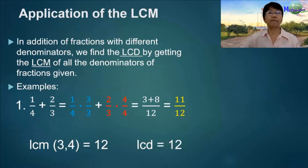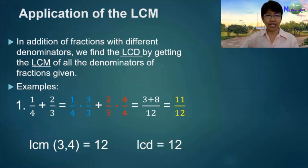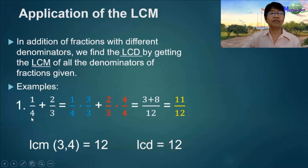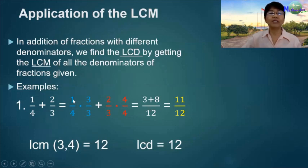Application of the LCM: in addition of fractions with different denominators, we find the LCD by getting the LCM of all the denominators. Example 1: for 1/4 and 2/3, we raise the fractions to higher terms where the denominator is the LCM, 12. For 1/4 we multiply by 3/3, and for 2/3 we multiply by 4/4 to get a common denominator of 12. Then we add the numerators: 3 plus 8.